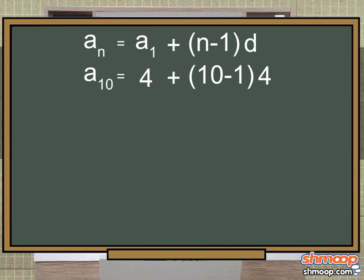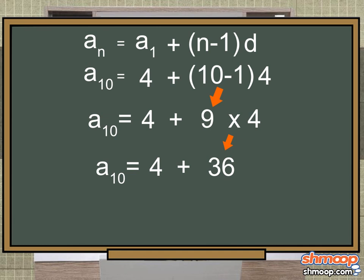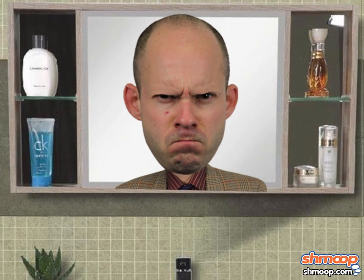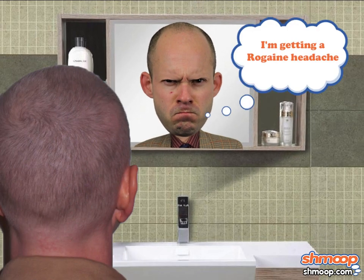Taking care of the stuff in the parentheses first, we get 10 minus 1 equals 9. 9 times 4 is 36. And 4 plus 36 equals 40. So our tenth term is 40. On the tenth and final day of the curse, Irving lost another 40 eyebrow hairs. He isn't completely browless, but it's a bit sparse up there. I'm getting a Rogaine headache.